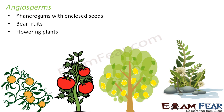Plants like rose, lily, and whatever you see around yourself all fall under angiosperms. They have broad leaves. These are some of the ways to distinguish between a gymnosperm and an angiosperm. In gymnosperms, you will see no fruit, no flower, and needle-shaped thin leaves. But in angiosperms, the leaves will be quite broad.